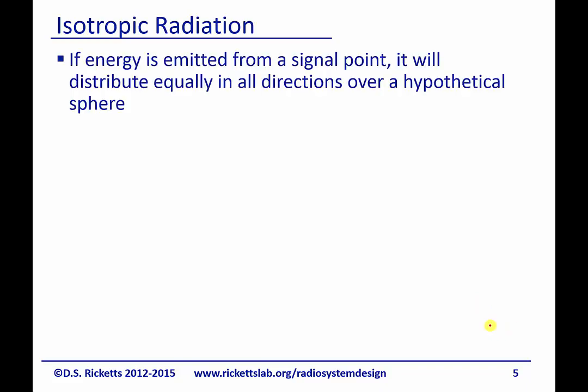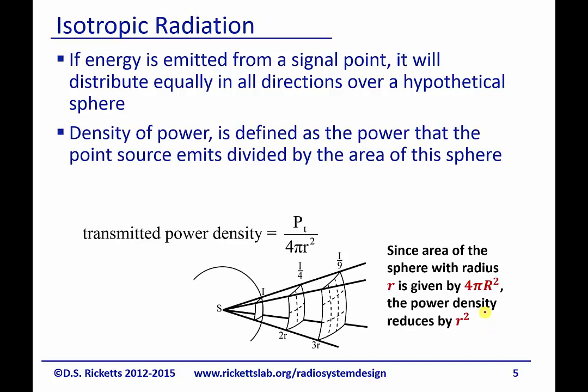So if energy is emitted from a single point, it will be distributed equally in all directions over a hypothetical sphere. And down here in the bottom, if you can imagine, here's the center point. If the energy is being radiated in the sphere, the area at a certain distance increases, and the power density decreases by that unit area.